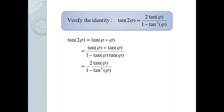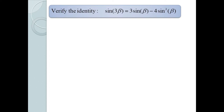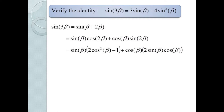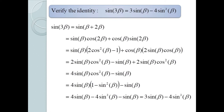Suppose we wish to verify the identity sin(3β) = 3 sin β − 4 sin³β. Write 3β as β + 2β, then use the sine sum formula to get sin β · cos(2β) + cos β · sin(2β). Substituting double angle identities — using 2cos²β − 1 for cos(2β) — gives 4 sin β cos²β − sin β. Substituting 1 − sin²β for cos²β and simplifying yields 3 sin β − 4 sin³β.